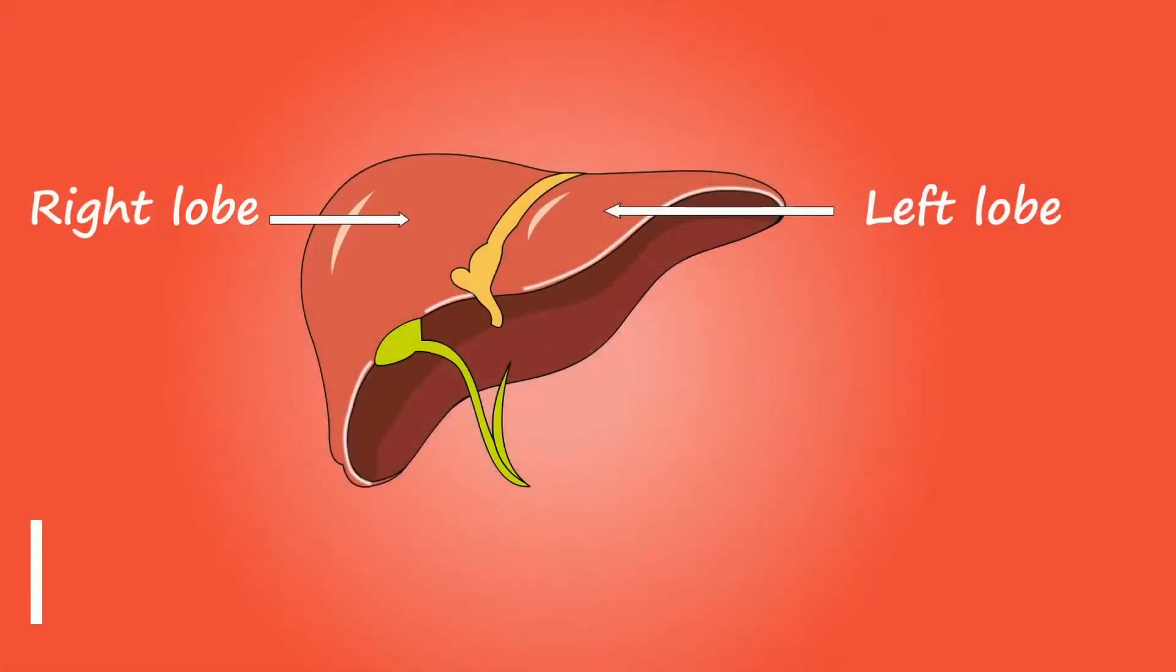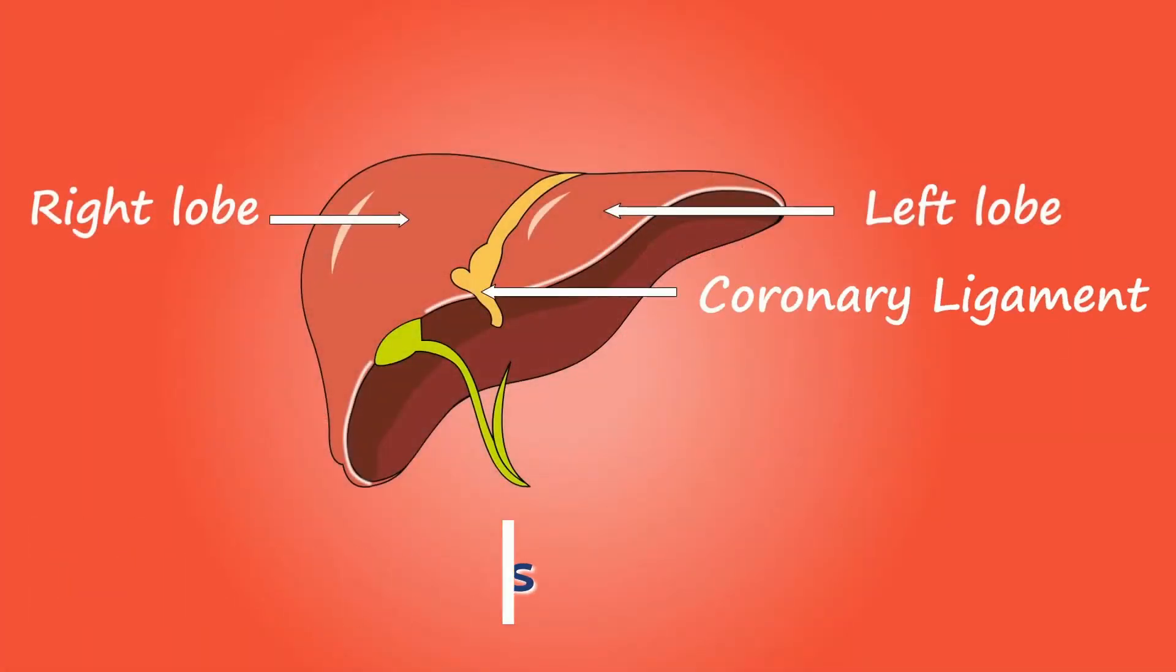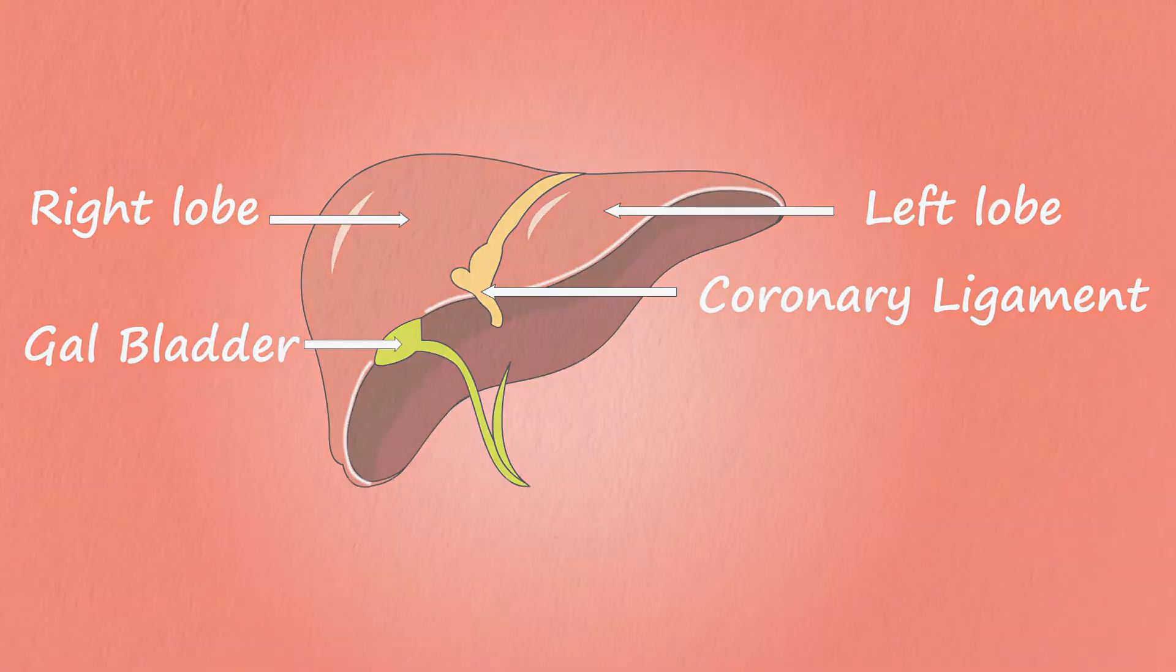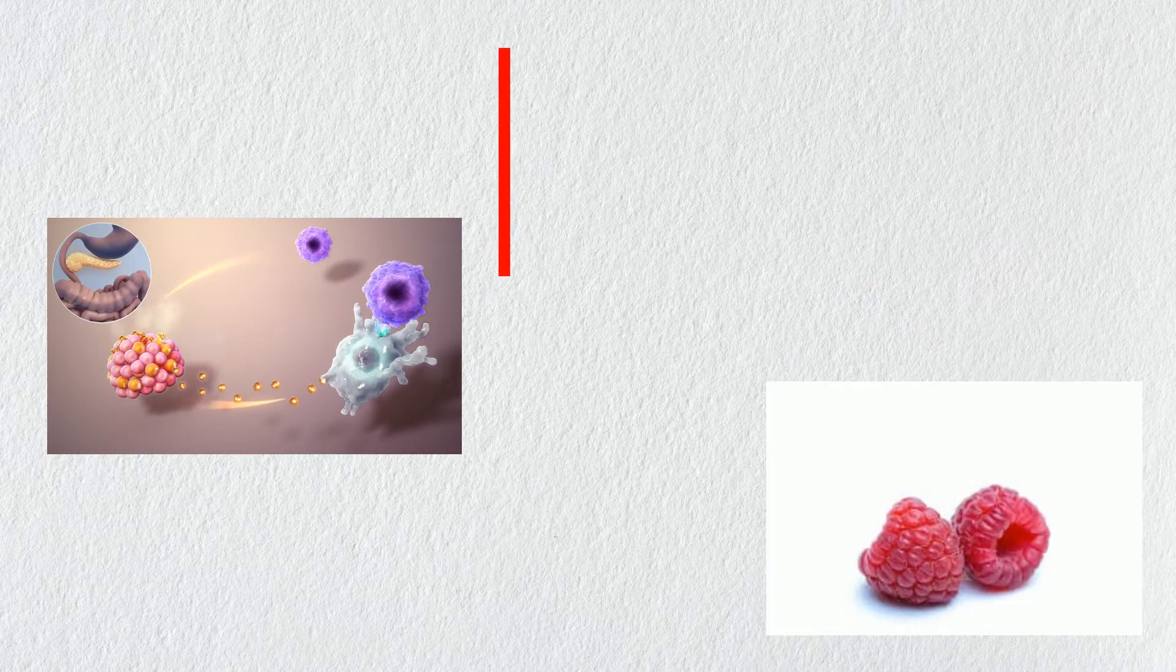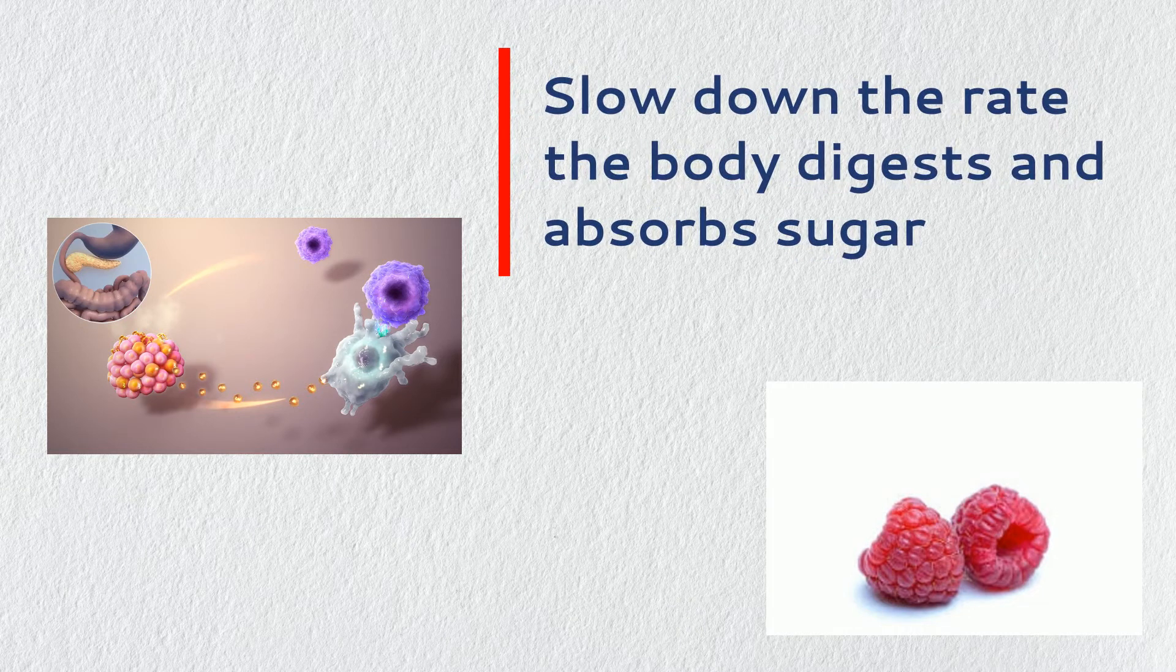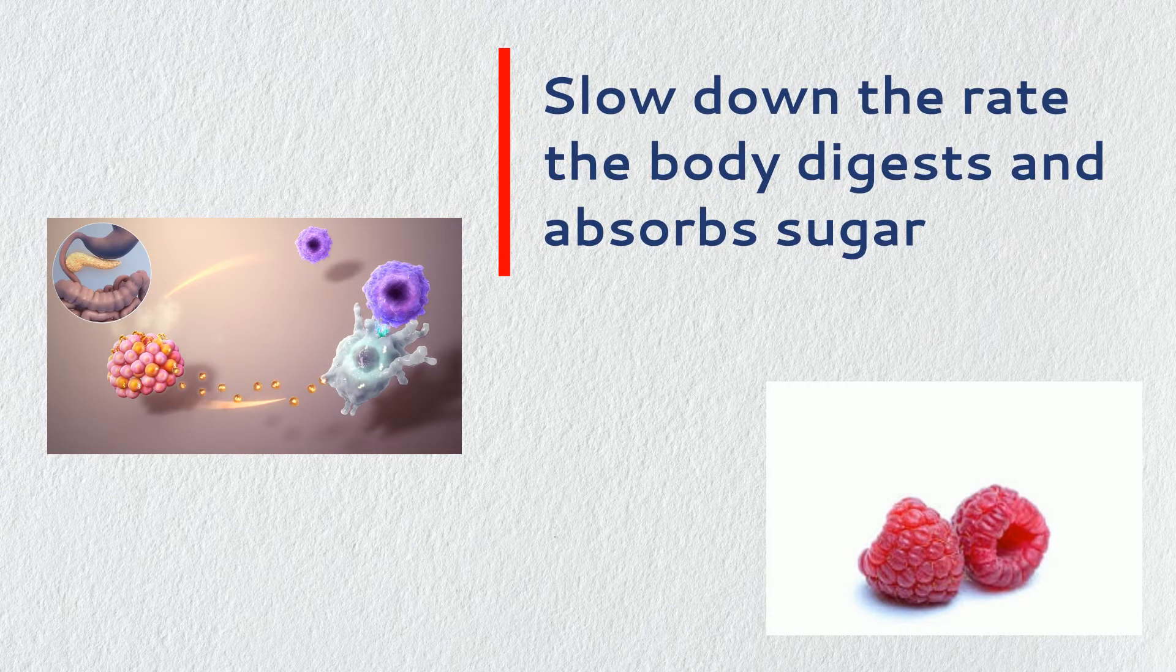Type 2 diabetes: Some researchers have reported that polyphenols may lower the risk for type 2 diabetes. Polyphenols may boost insulin sensitivity as well as slow down the rate the body digests and absorbs sugar.